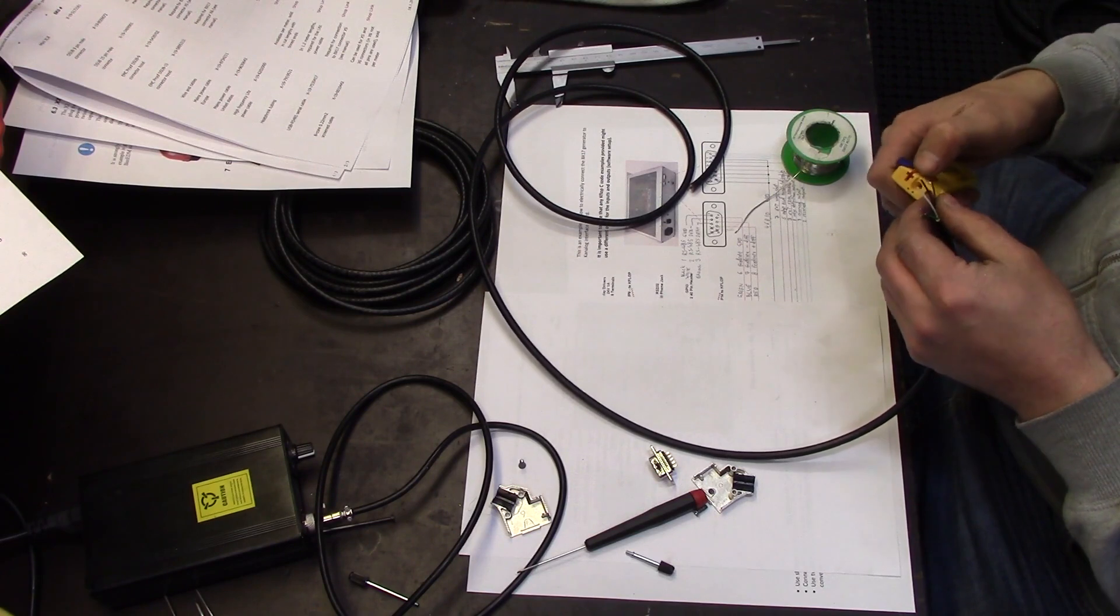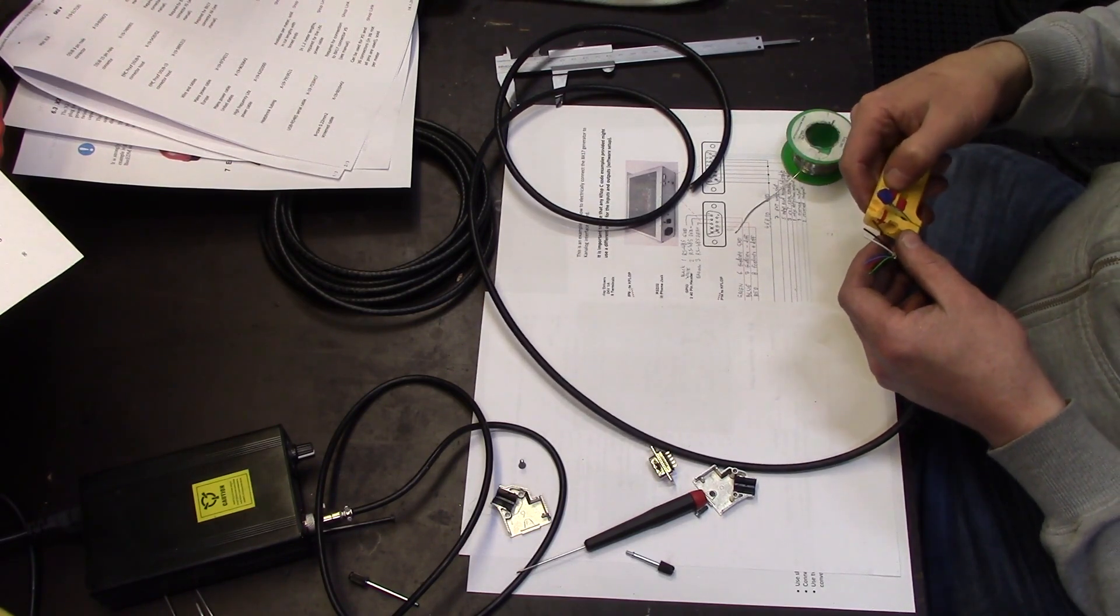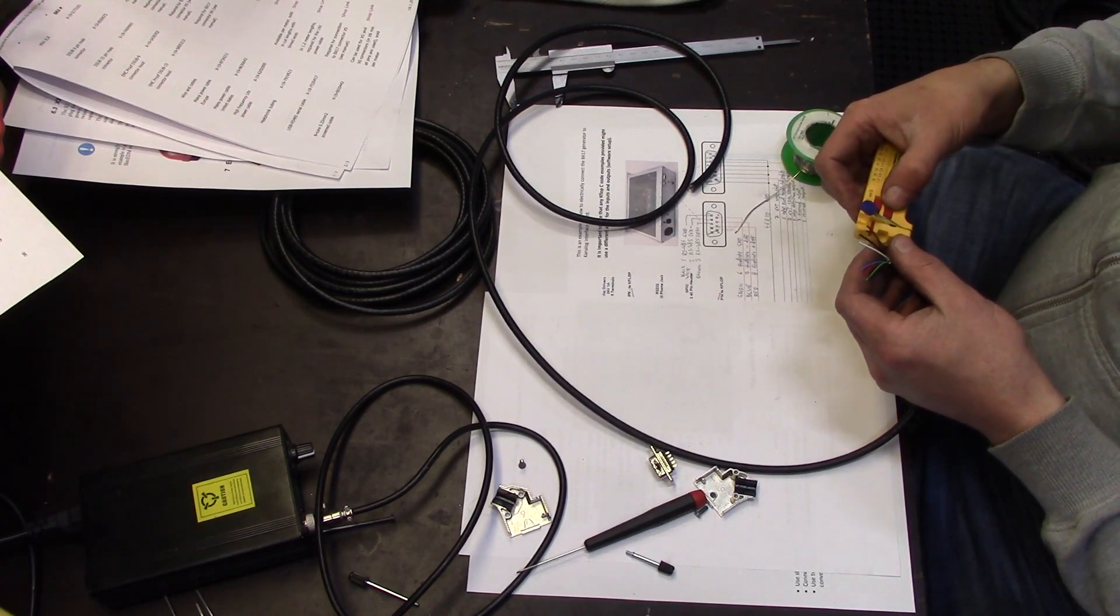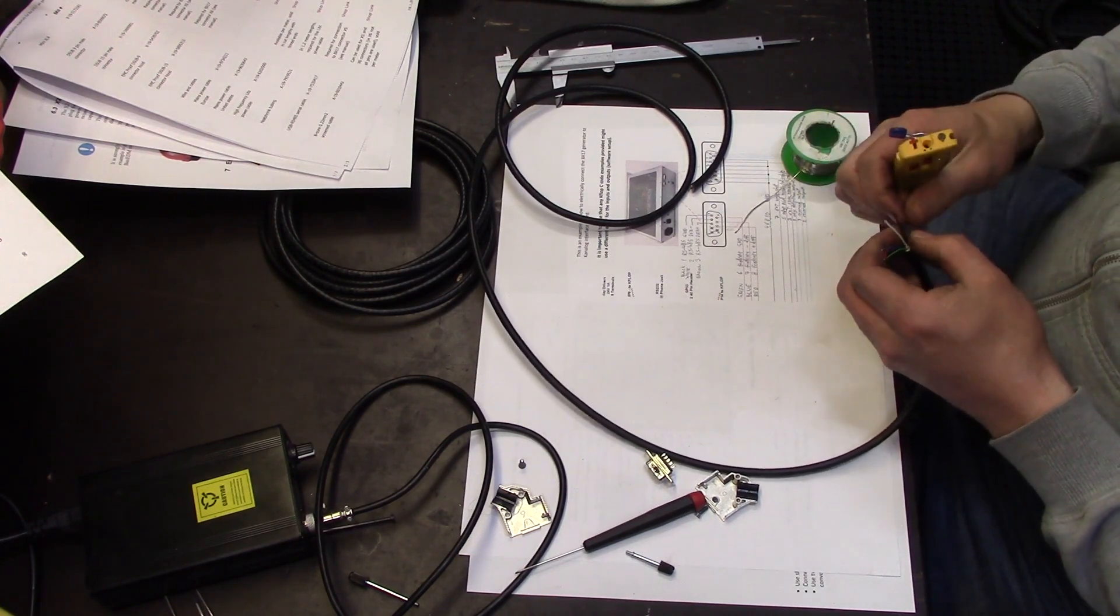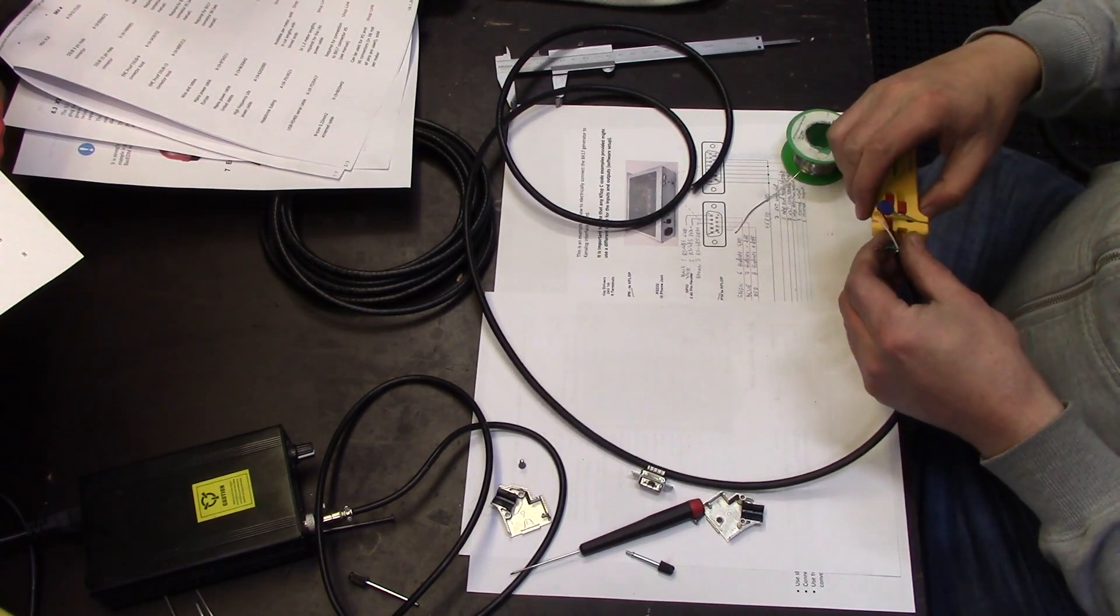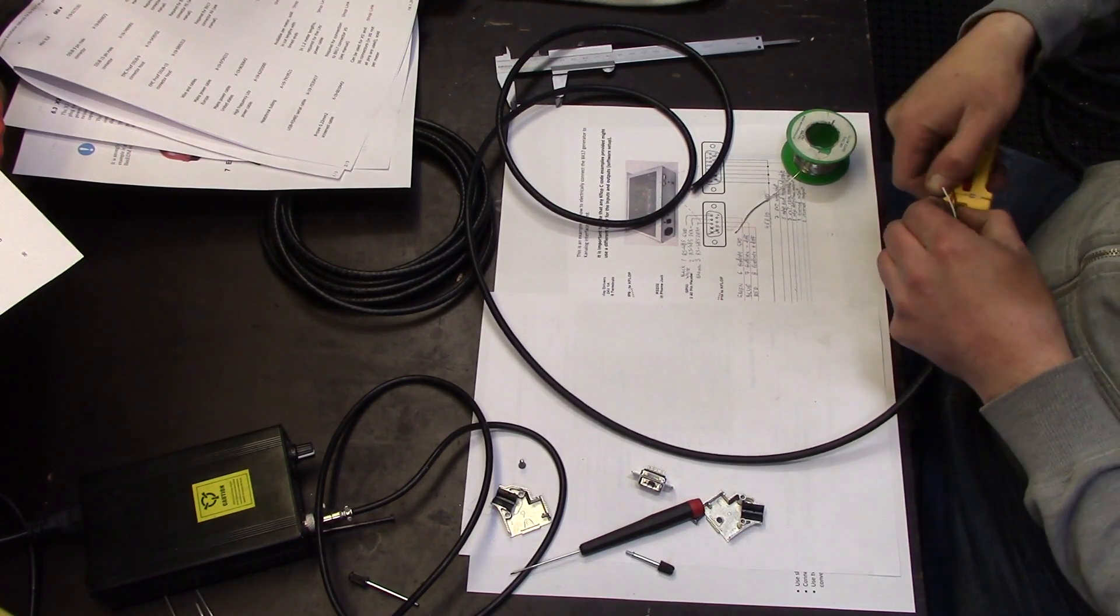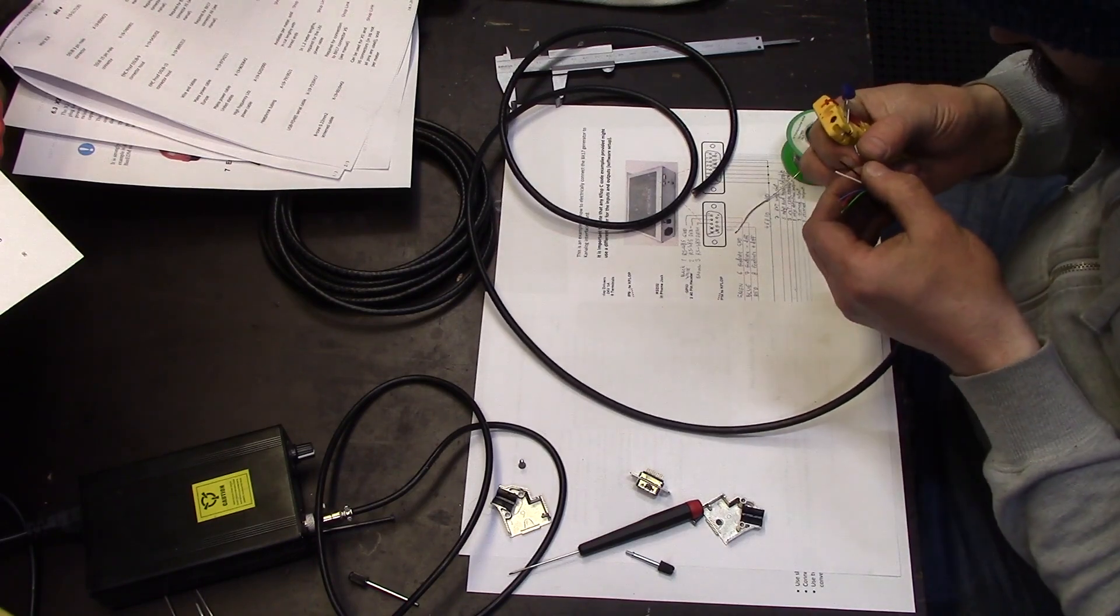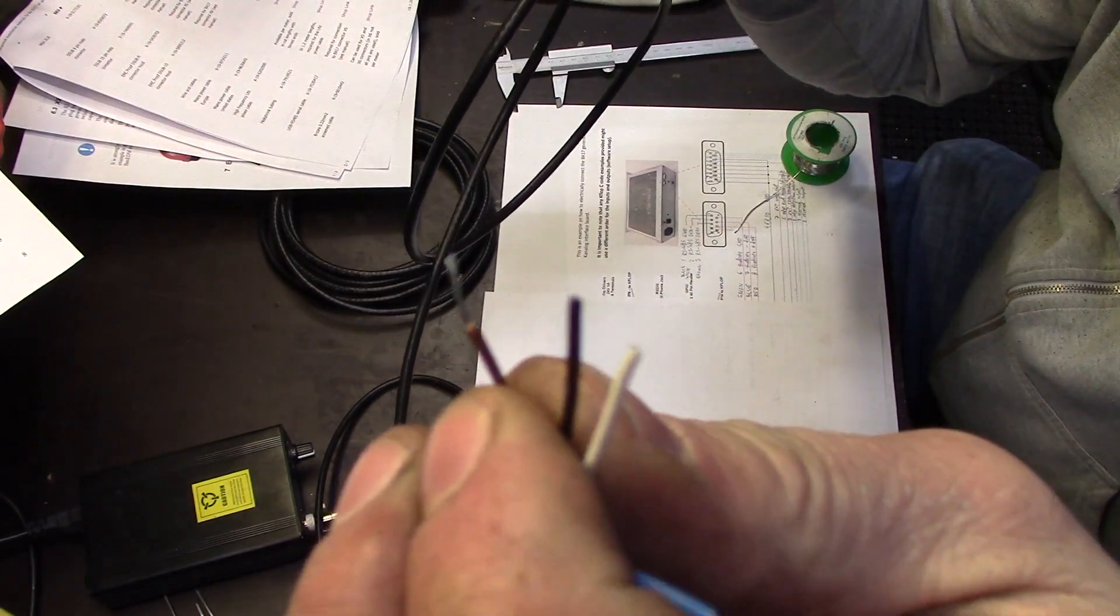The wire stripper is not going to be handy. Let's see how this works. Put the thing open. We have half a millimeter selected. Seven millimeter length, roughly. Okay. Put the wire in. Put it on. Oh. Oh. Look at it. Perfect.